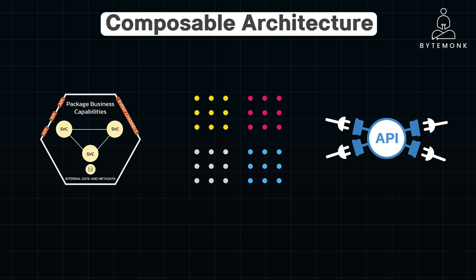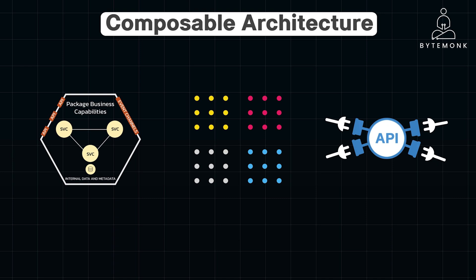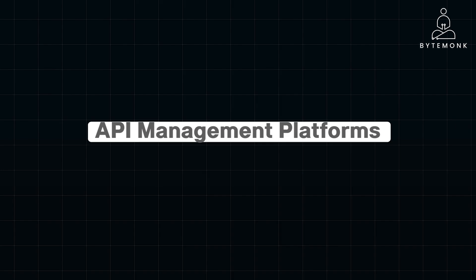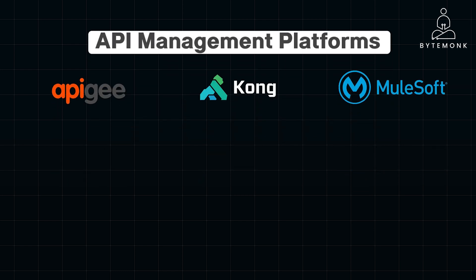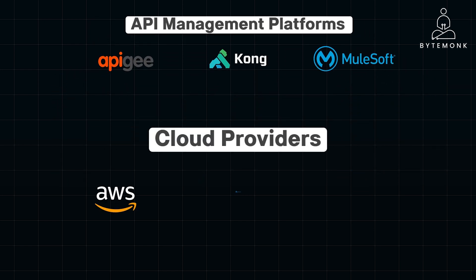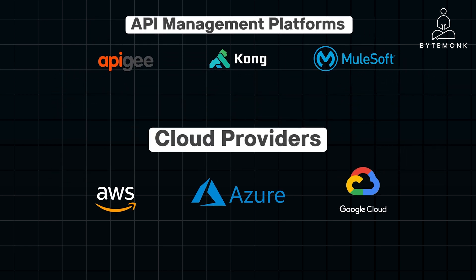In recent years, the tooling landscape for composable architecture has evolved significantly. Mature API management platforms like Apigee, Kong, and MuleSoft provide robust features for designing, publishing, and securing APIs. Cloud providers like AWS, Azure, and Google Cloud offer managed services for container orchestration such as Kubernetes, serverless computing, and API gateways, further simplifying the deployment and scaling of composable systems.